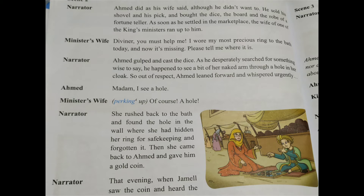Scene 2. Ahmed did as his wife said, although he didn't want to. He sold his shovel and his pick and bought the dice, the board, and the robe of a fortune teller. As soon as he settled in the marketplace, the wife of one of the king's ministers ran up to him. Minister's wife: 'Diviner, you must help me. I wore my most precious ring to the bath today and now it's missing.'